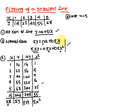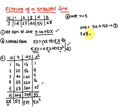The first normal equation becomes: 204 equals 5a plus 15b. The second normal equation with sigma xy equal to 748 becomes: 748 equals 15a plus 55b.